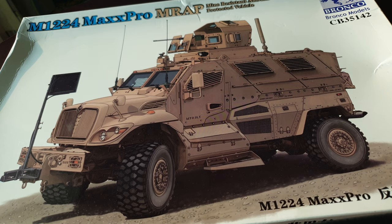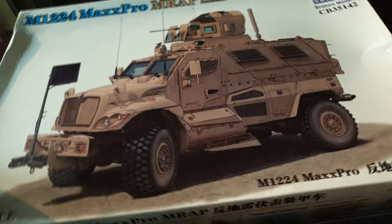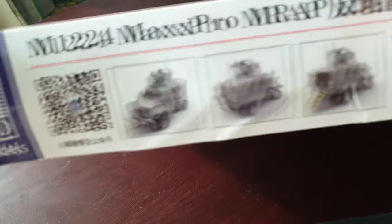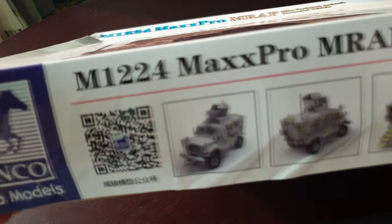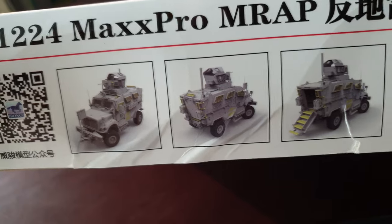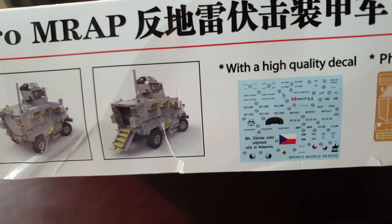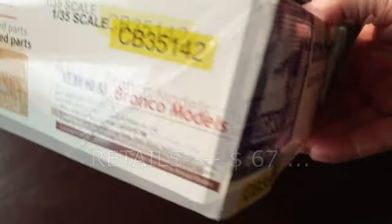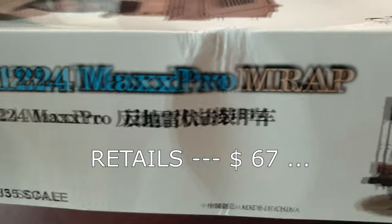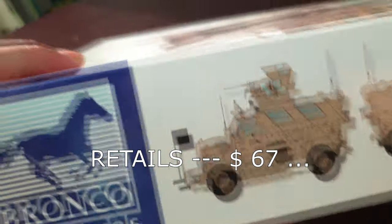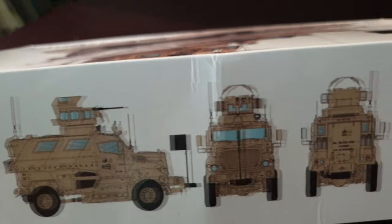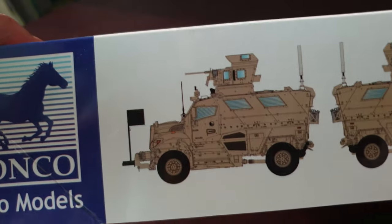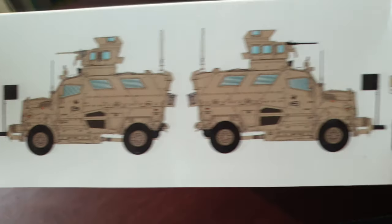Let's have a look at this kit. Here's the box, it is slightly battered. On the side there are some renditions of the built model. It says it's got high quality decals and photo-etched parts. This kit is a little bit expensive from what I've seen. This is actually the Czech version. Basically it's a sand colored vehicle. There's nothing on the back, so let's open this up.